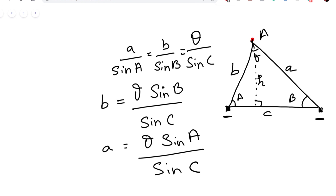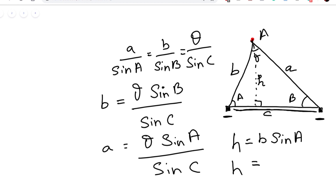Another relationship we can write is for h — the distance between object A and the datum plane, which is the plane where the two cameras are placed. We can write h = b × sin(A), or equivalently h = a × sin(B). The derivation of this is straightforward and I'll leave it as an exercise for you.